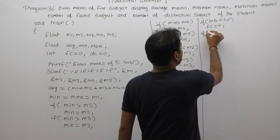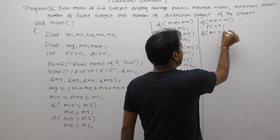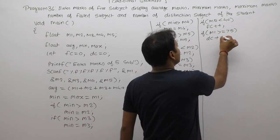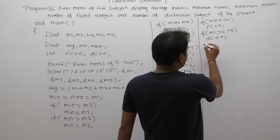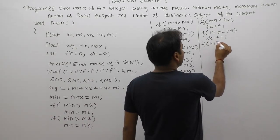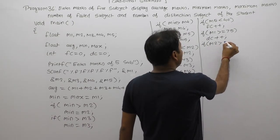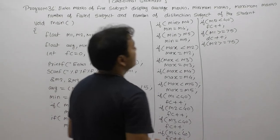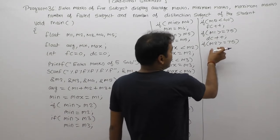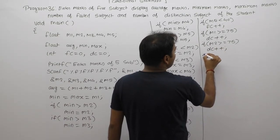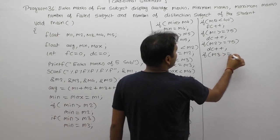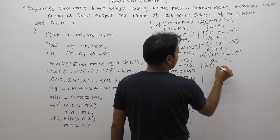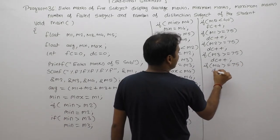For distinctions, apply conditions for each subject. If M1 is greater than or equal to 75, perform DC++. DC initial value is 0. If M2 is greater than or equal to 75, perform DC++. Apply this condition 5 times for each marks. If M3 greater than or equals to 75, DC++. If M4 greater than or equals to 75, again DC++.